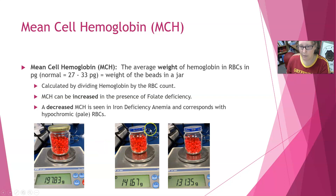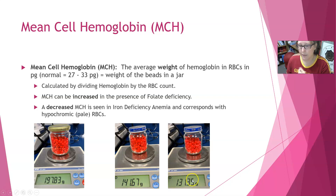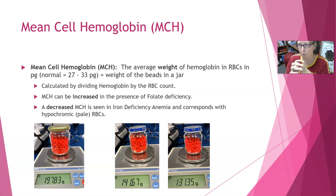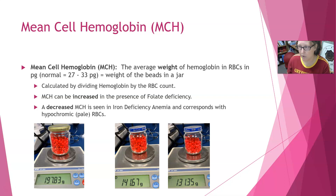A smaller red cell that's pretty full of hemoglobin represents a smaller weight. A cell the same size but with even less hemoglobin — shown by removing some beads — represents an even lower weight. So sometimes you can have smaller red cells that are full of hemoglobin, and sometimes you can have smaller red cells that are not full of hemoglobin. A decreased MCH, meaning decreased weight, is often seen in iron deficiency anemia.